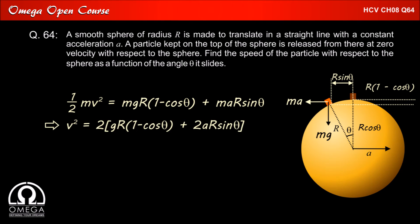Which implies V square is equal to 2 into G R into 1 minus cos theta plus A R sin theta. Which implies V is equal to square root of 2 R into G minus G cos theta plus A sin theta. Which is our answer.